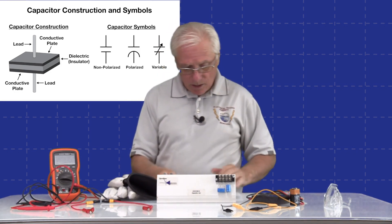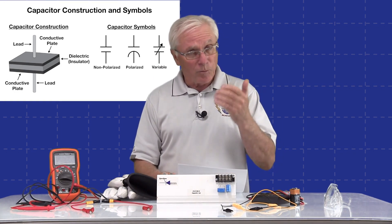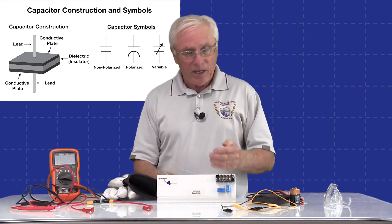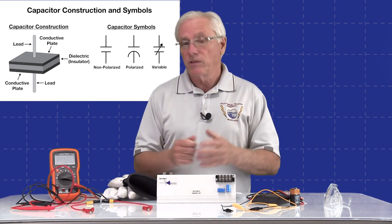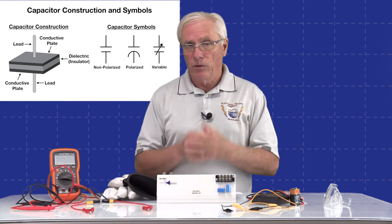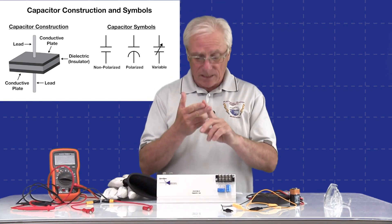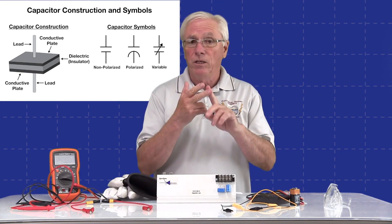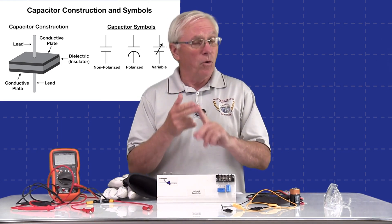You'll also notice there are symbols for a non-polarized capacitor, a polarized capacitor, and a variable capacitor. At a very basic level, the two types of capacitors we really have to talk about are the non-polarized capacitor and a polarized capacitor. A non-polarized capacitor would be used in an AC circuit, whereas a polarized capacitor is only used in a DC circuit.